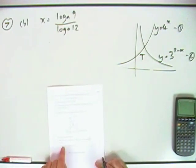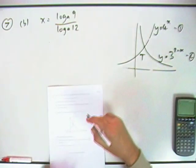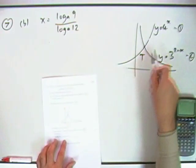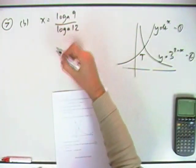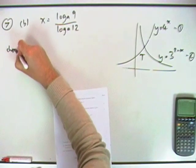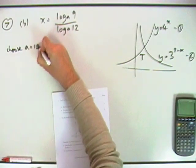Part B, calculate the y coordinate. It says calculate, not find an exact value, luckily, because I don't want to be writing something like this. I'm not going to substitute it back in, I don't want 4 to the power of this business. But since A can be anything, I'm just going to choose anything convenient. I'm going to choose A equals 10.